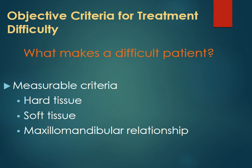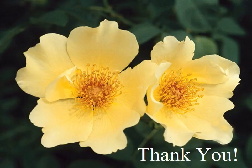Objective criteria for treatment difficulty — what makes a difficult patient? The measurable criteria are the hard tissue, soft tissue, and the maxillomandibular relationship. These are the factors that form the objective criteria determining whether a case or patient is difficult or easy.